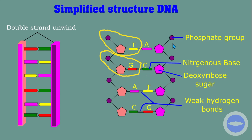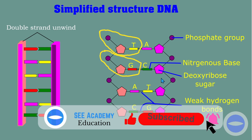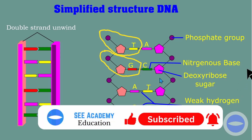Sometimes in exams they draw a DNA and ask you to label it — for example, they might label A and ask the name of the nitrogenous base it bonds with. You must know that A always bonds with thymine. That is all for today's lesson. Good luck with your studies. God bless you.